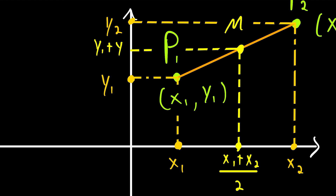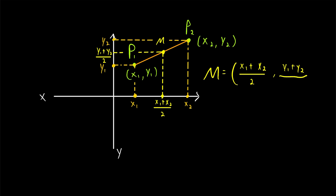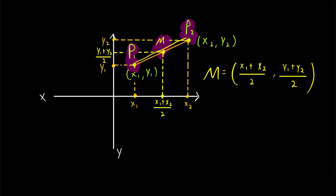To find the y-coordinate that's halfway between y1 and y2, we do the same thing as before — we just take the average. So add the y-coordinates of p1 and p2, that's y1 plus y2, and then divide by 2. So the midpoint M has an x-coordinate equal to the average of the x-coordinates: x1 plus x2 divided by 2. And the midpoint has a y-coordinate equal to the average of the y-coordinates of p1 and p2: y1 plus y2 divided by 2. Given two points p1 and p2 with coordinates (x1, y1) and (x2, y2), these are the coordinates of the midpoint.